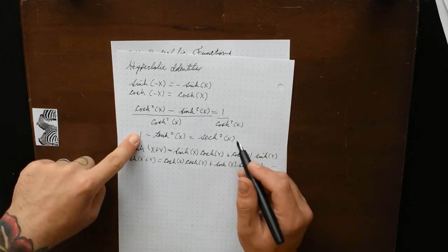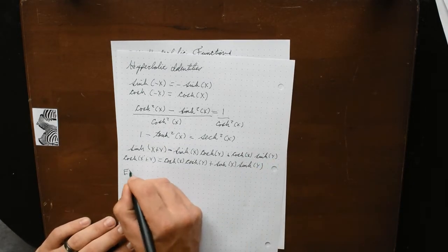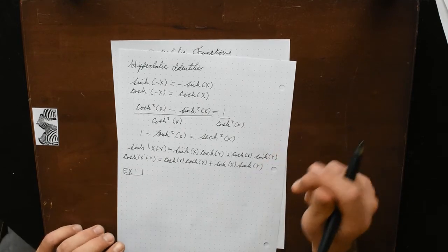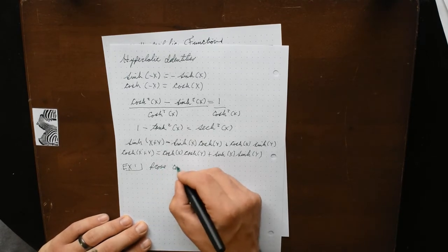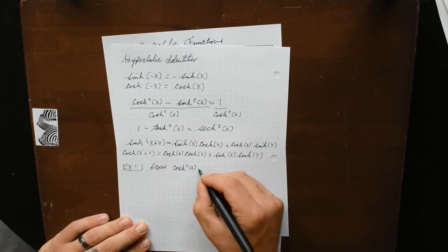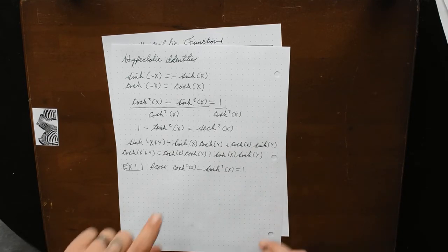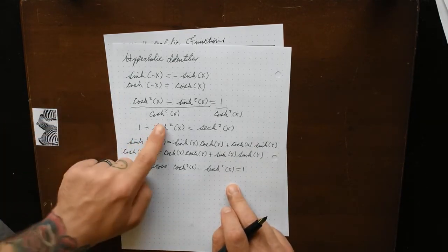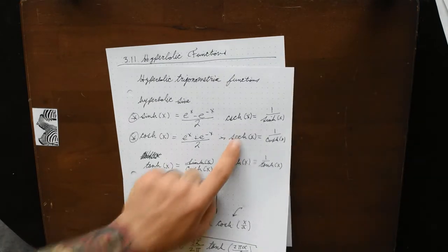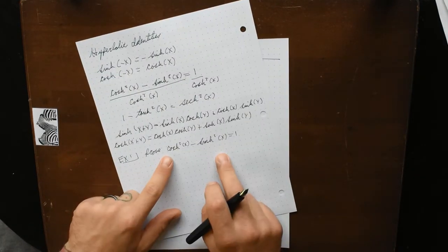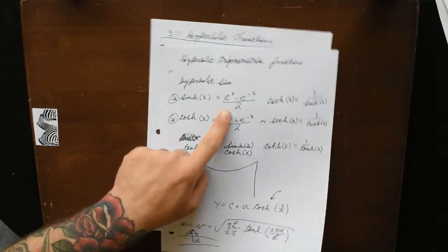In example one, the first thing we're tasked to do is prove the identity. We're going to prove that cosh²(x) minus sinh²(x) is equal to 1. Sometimes when identities aren't straightforward, we're not just relying on basic definitions. These identities can be convenient if you return cosh and sinh to their exponential definitions.